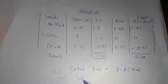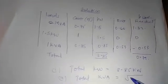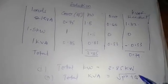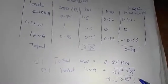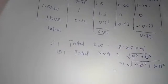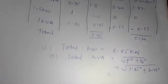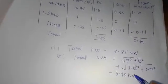For total KVA, we use the formula: KVA = √(KW² + KVAR²). That gives us √(3.85² + 0.79²) = √(14.82 + 0.62) = √15.45 ≈ 3.93 KVA. So the total KVA is 3.93 kilovolt-amperes.